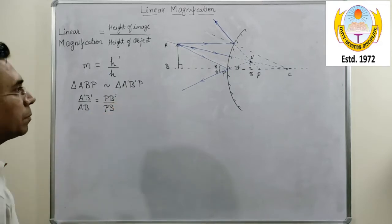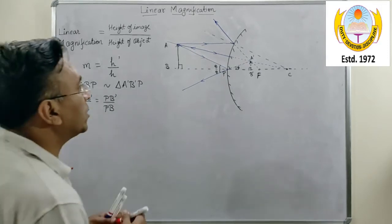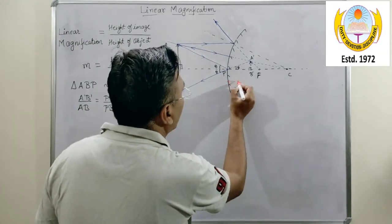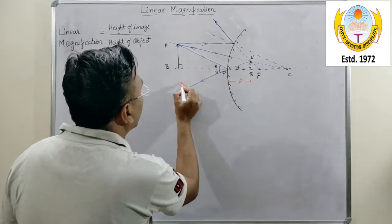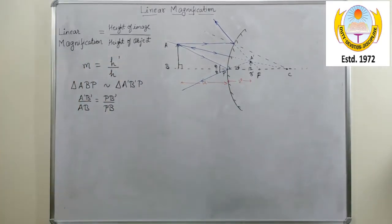Now, here PB' is obviously V which is the image distance, and PB over here is U which is the object distance.